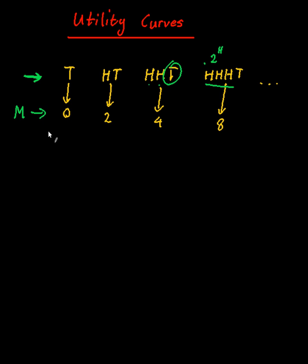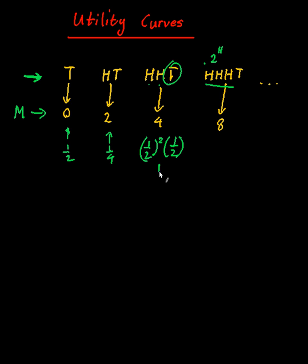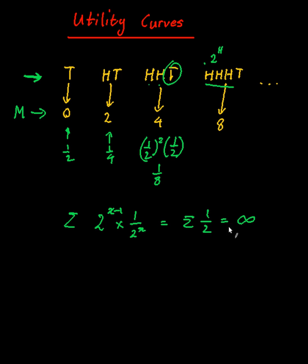So this is the money that you end up getting. According to the St. Petersburg paradox, just as a recap, the probability of getting tails first was one half, then one quarter, and so on — half squared times a half gives one eighth. It turned out that the prize money was two to the X minus one times one on two to the X, which happened to be the summation of one half, which ended up being equal to infinity. If you don't understand what I just did there, watch my previous video.